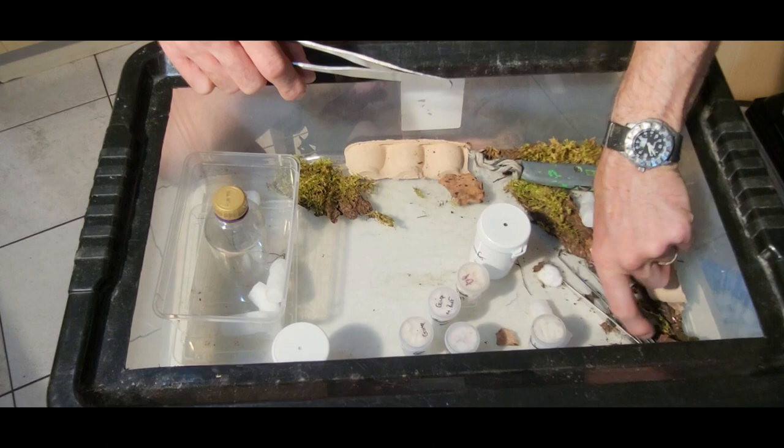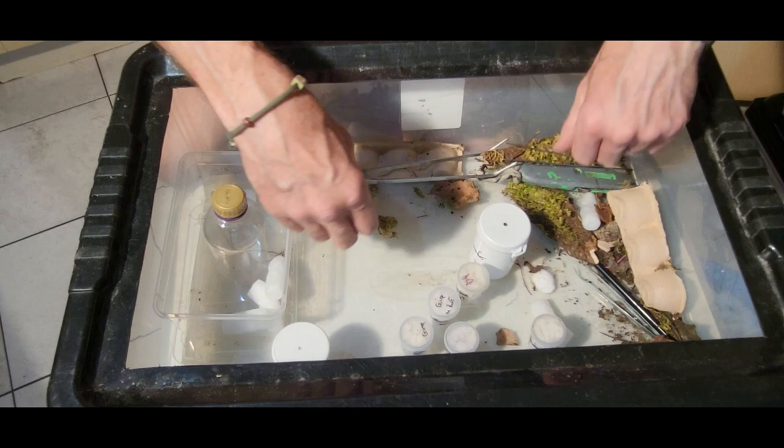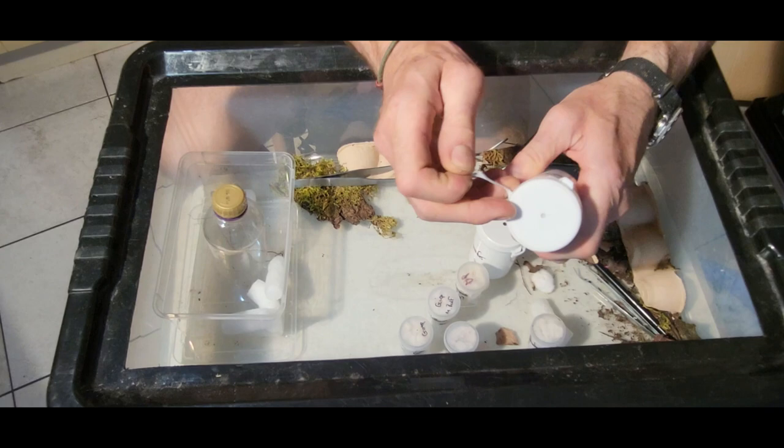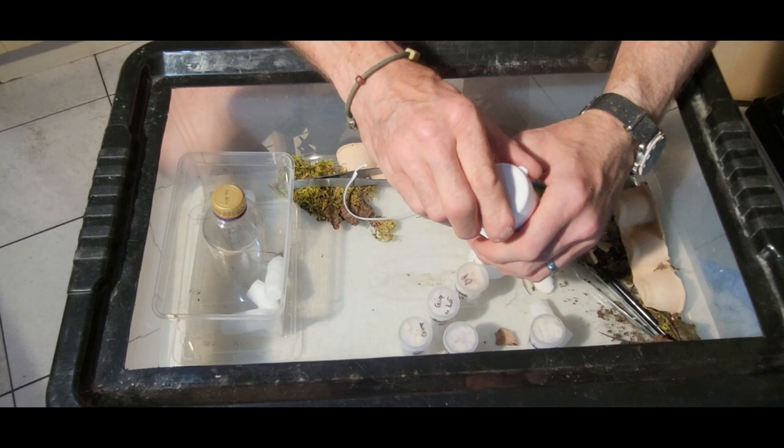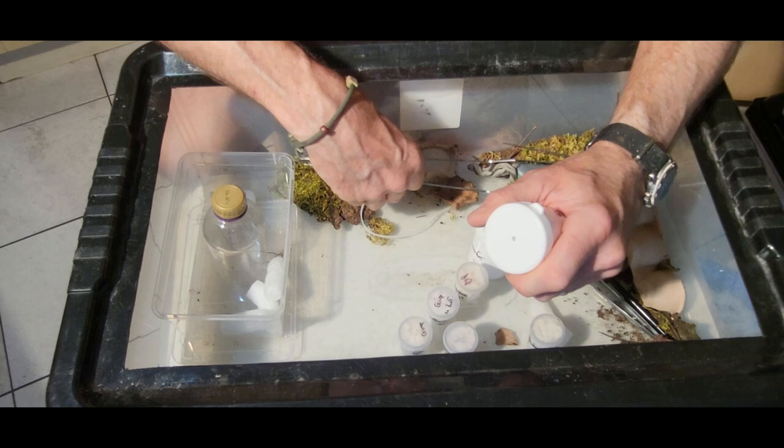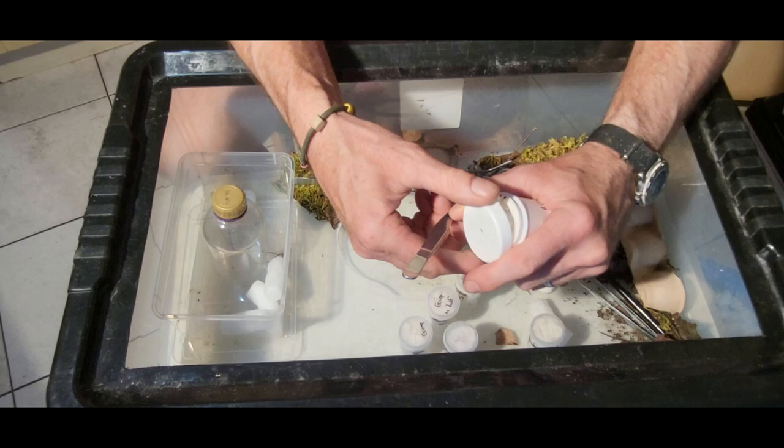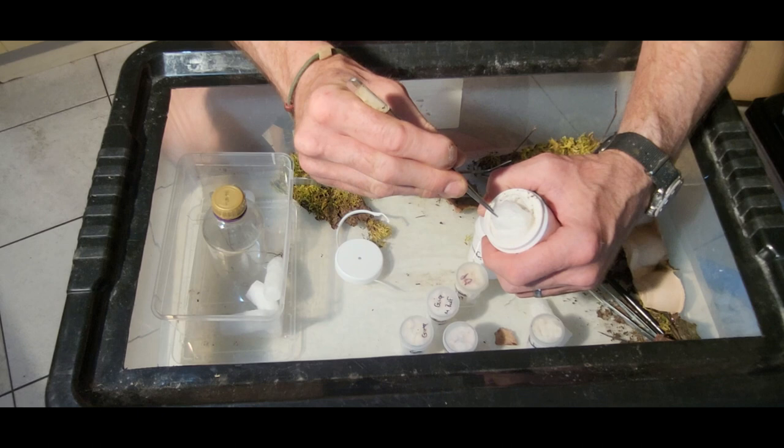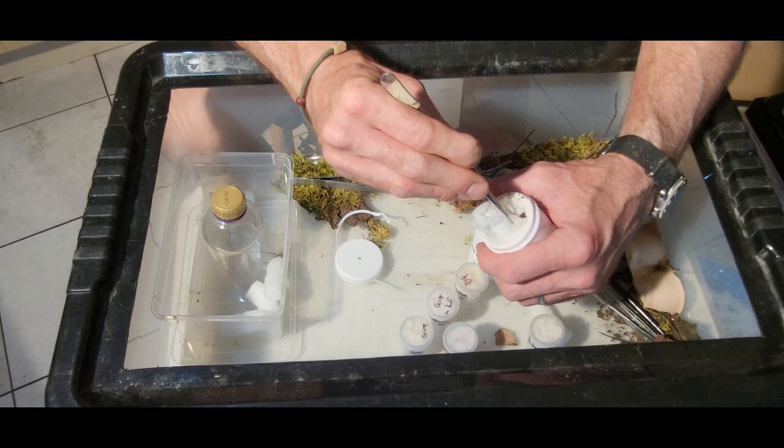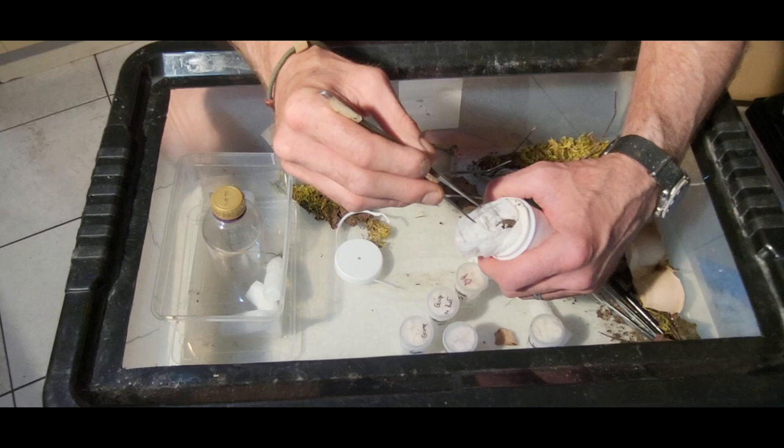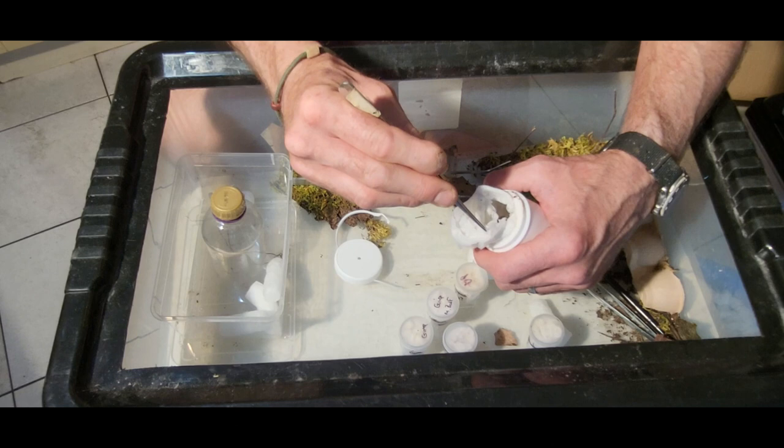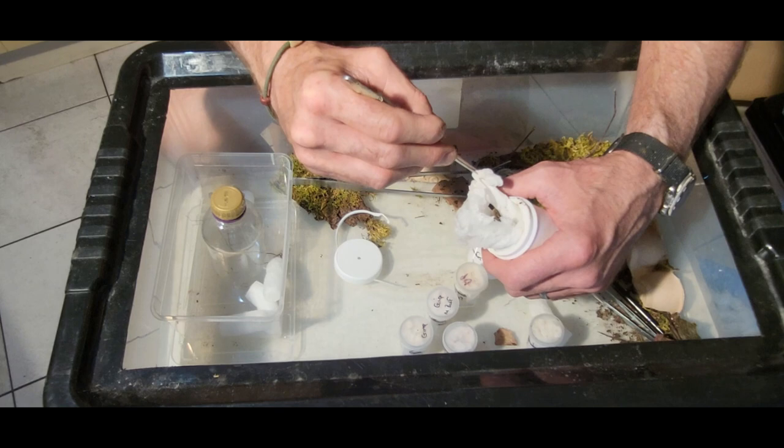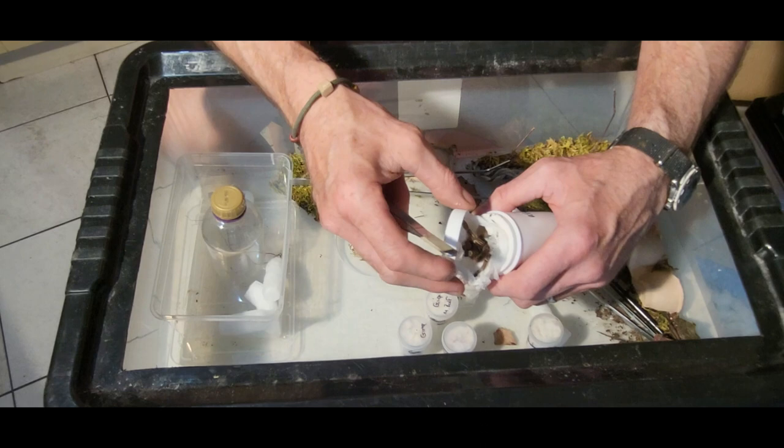Let's just check for the signs of life, the easiest first. So Acanthoscurria geniculata. I do like Acanthoscurria geniculata. I think there's different color forms - the bluish one, the more brownish one. I've got lots of different enclosures to make up. Just want to see if we've got signs of life.